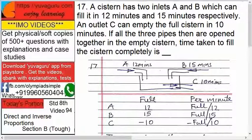So full in 12 minutes. So per minute, how much water will flow? Full upon 12. For B, full upon 15. Whatever this full quantity is, upon 15. And C is full upon 10. Right.